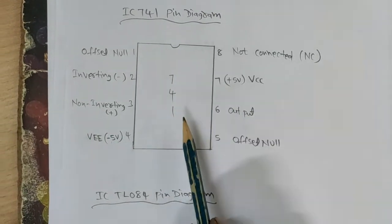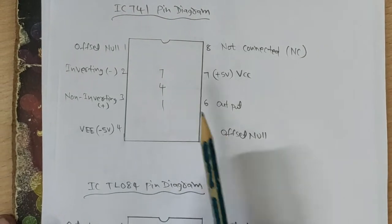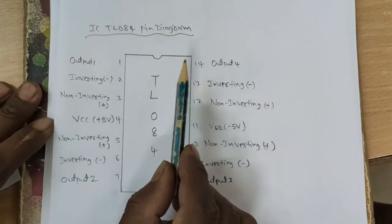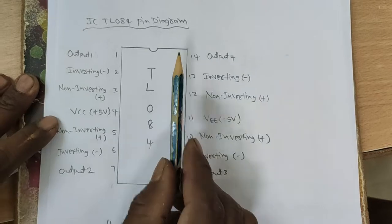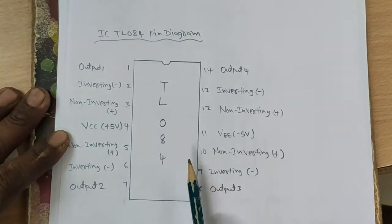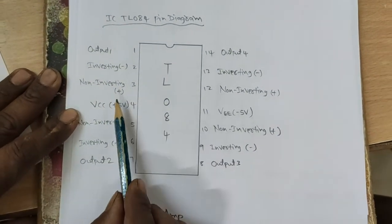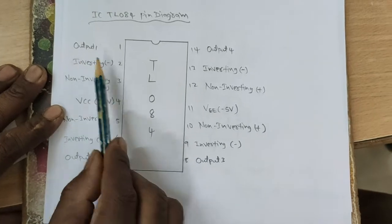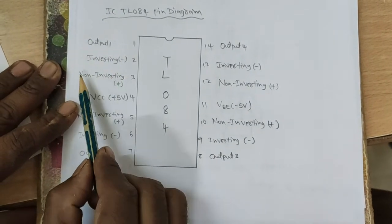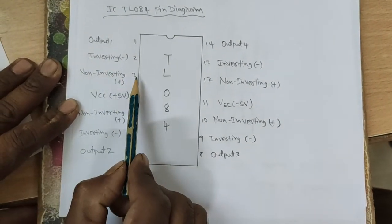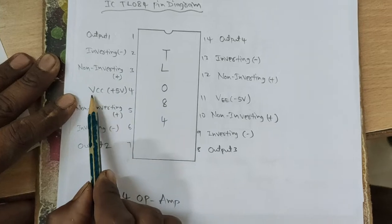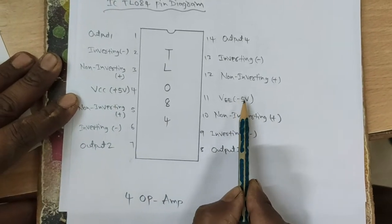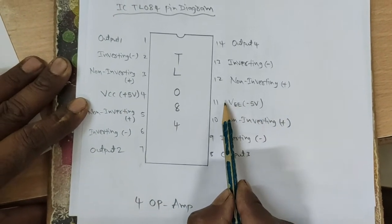This is the 741 pin configuration. Another IC is the TL084 pin diagram. Here there are 4 op-amps. The first op-amp output is pin 1, inputs are pin 2 (inverting) and pin 3 (non-inverting), VCC plus 5 volts is the 4th pin, and minus 5 volts is the 11th pin.